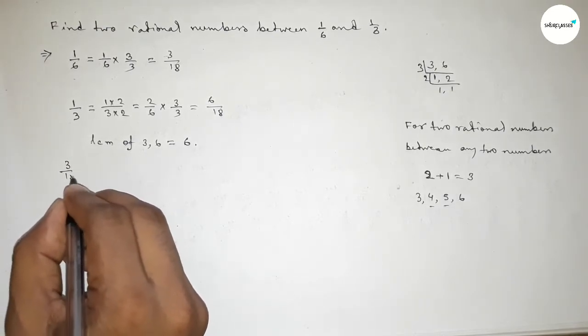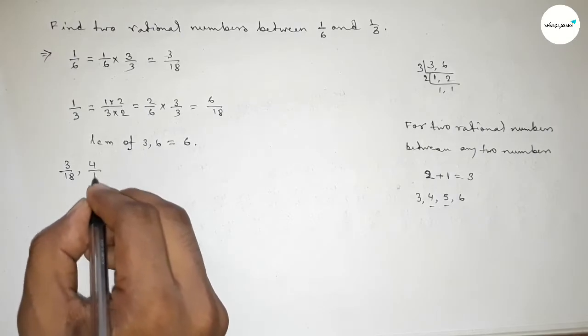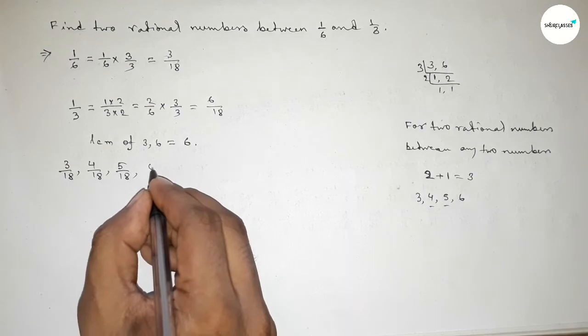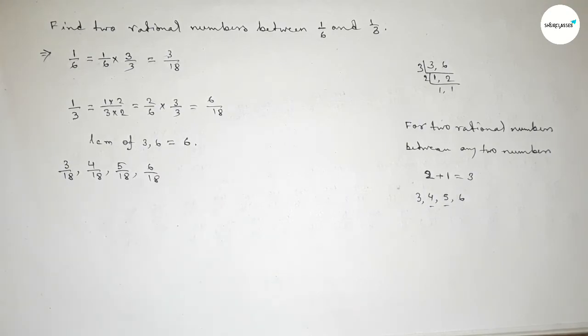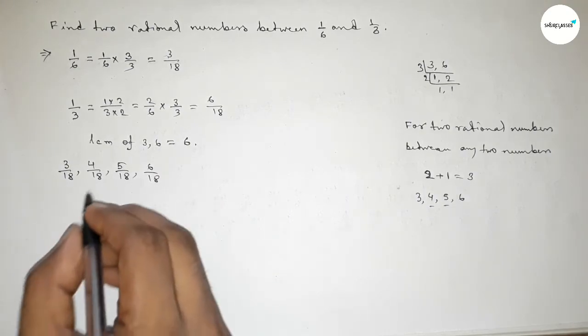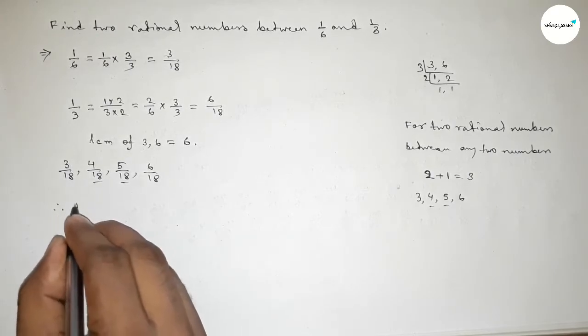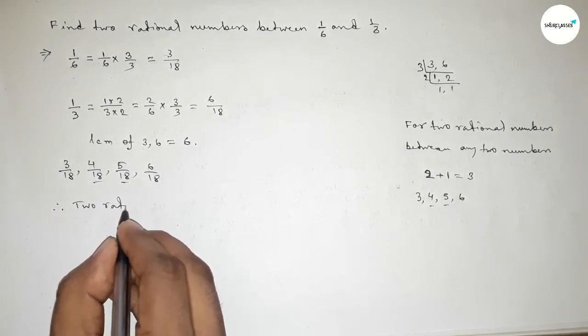Now write down here all the rational numbers first: 3 over 18, 4 over 18, 5 over 18, and 6 over 18. And among these, these are the two required rational numbers between 1 over 6 and 1 over 3.